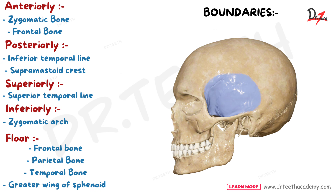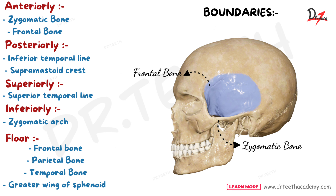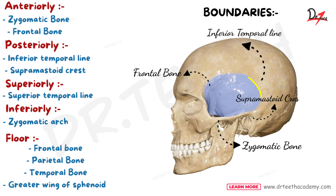Let's talk about its boundaries. Anteriorly, it is bounded by the zygomatic and the frontal bone — that is the anterior boundary. Posteriorly, it is bounded by the inferior temporal line and the supramastoid crest, which forms the posterior boundary.